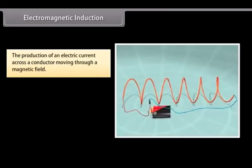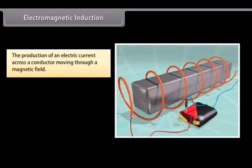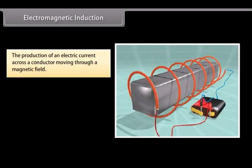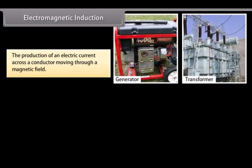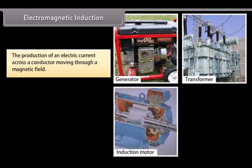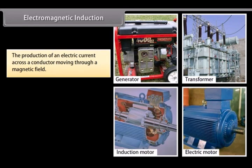The production of an electric current across a conductor moving through a magnetic field is called electromagnetic induction. For example, generators, transformers, induction motors, electrical motors, synchronous motors, and solenoids all use electromagnetic induction.